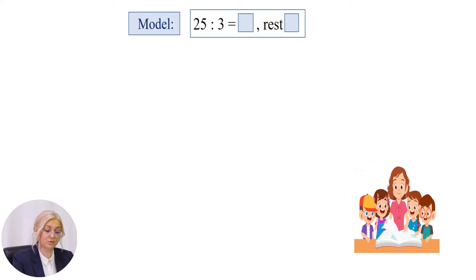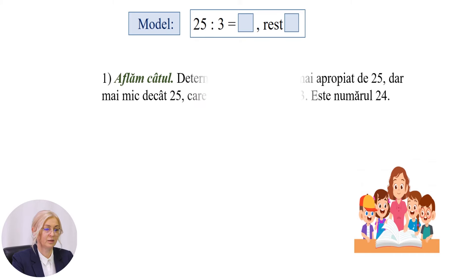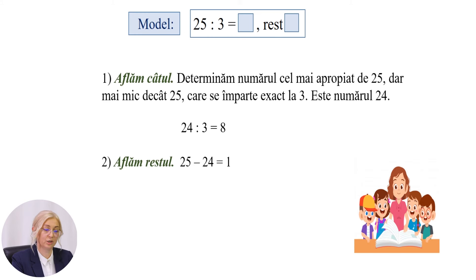În continuare, vă propun să rezolvați următoarele exerciții după model. 25 împărțit la 3. Deci, în primul rând, aflăm câtul. Determinăm numărul cel mai apropiat de 25, dar mai mic decât 25, care se împarte exact la 3. Deci, este numărul 24. 24 împărțit la 3 este egal cu 8. Aflăm restul: 25 minus 24 este egal cu 1. Probe. Prima probă: 1 este mai mic decât 3. Și proba a doua: 8 împărțit la 3 plus 1 este egal cu 25. Răspuns: 25 împărțit la 3 este egal cu 8 rest 1.